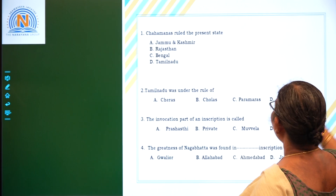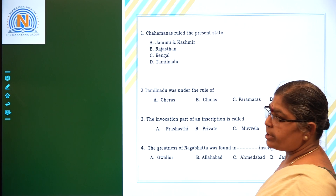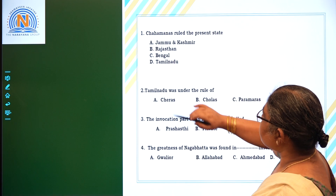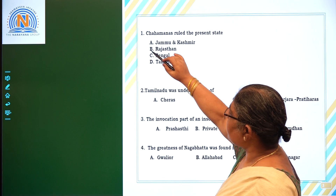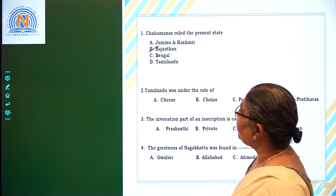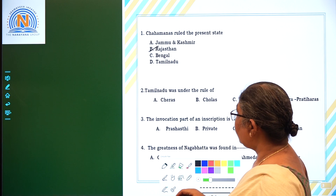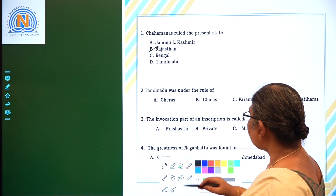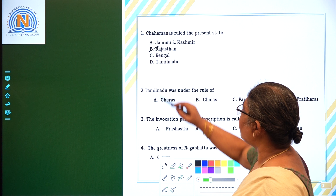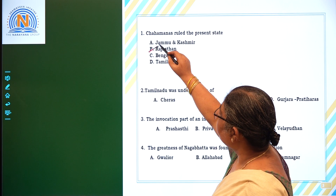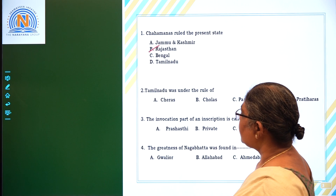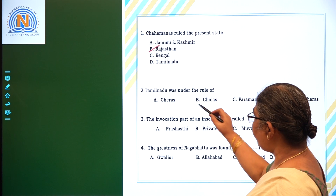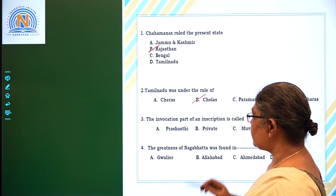Based upon that, let us look at the questions. Which state was ruled by Chamanas? The Rajasthan region was ruled by the Chamanas. Tamil Nadu was under the rule of — Tamil Nadu was ruled by the Cholas.